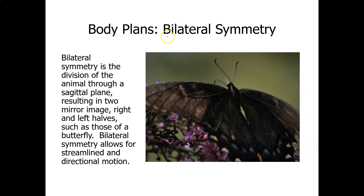Animals with bilateral symmetry can be divided into left and right halves. They normally have a head region and a tail region. A butterfly, for example, has two antennae and two pairs of wings, and you can divide it into two equal halves only one way — by drawing a line down its middle. That is bilateral symmetry.